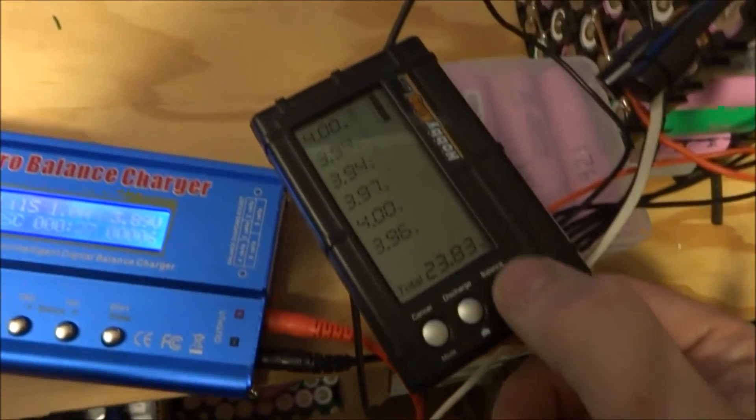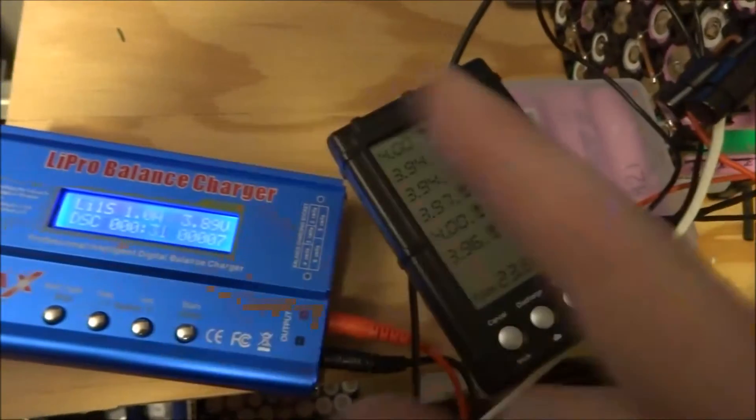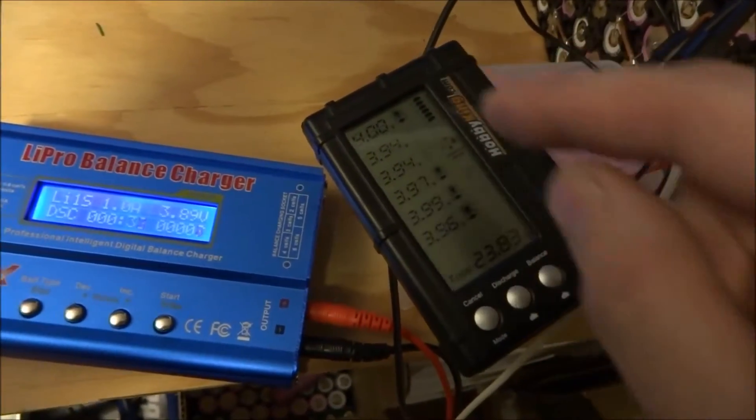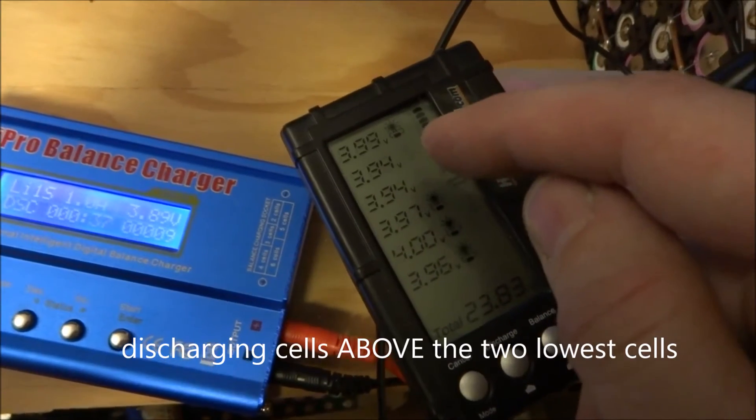So I'm going to start the balance function on this. The IMAX with these should eventually... So you can see it's discharging every cell pair that are below the lowest, which is these two.